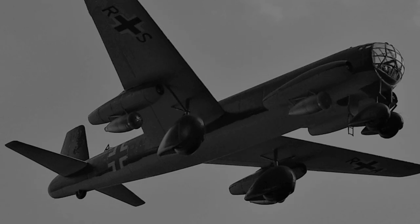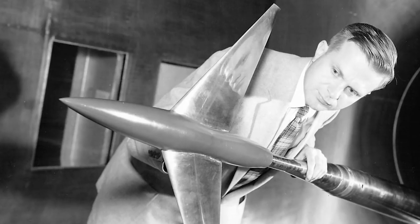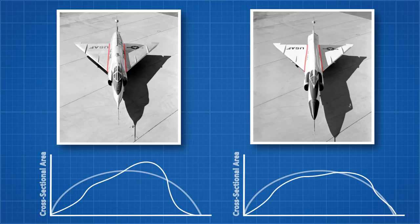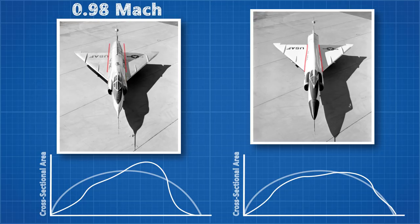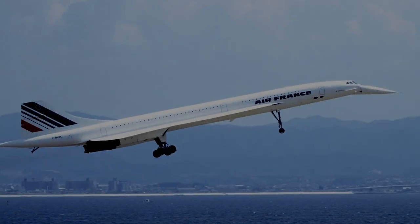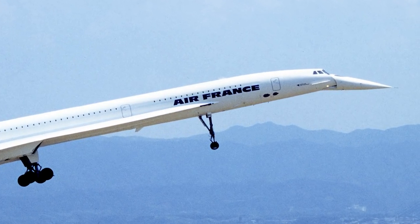The effect was discovered again by Richard Whitcomb when testing models in a wind tunnel in the 1950s. His discovery was used to redesign the F-102 Delta Dagger, which was originally designed with a straight fuselage. The redesign tapered the fuselage over the wings, allowing the distribution of cross-sectional area to more closely resemble the ideal. This small change, along with slightly more powerful engines, brought its max speed from 0.98 Mach to 1.22 Mach.